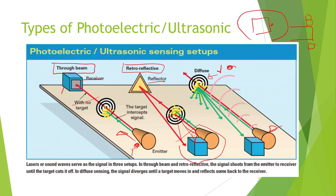Ultrasonic sensors use super high-pitched sound we can't hear. They send a little pulse and the receiver listens for it to come back. Similar to through-beam or retroreflective-diffuse styles, you may set a specific time window — only accept the return pulse within a certain time frame. The ultrasonic noise travels at the speed of sound, so an extremely short time frame is all you really need.